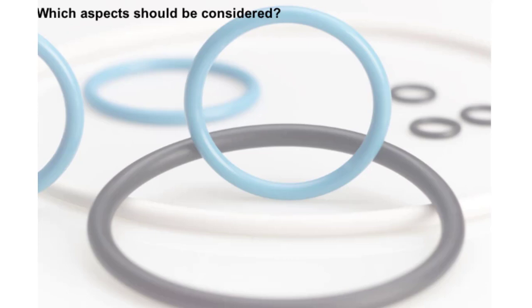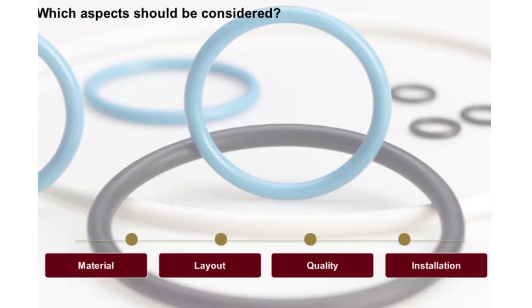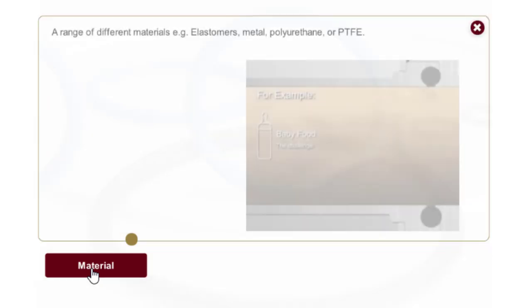There are four aspects to consider when selecting an O-ring: material, layout, quality, and method of installation. Choosing the right O-ring and housing layout is important to maximize seal life and minimize maintenance costs.